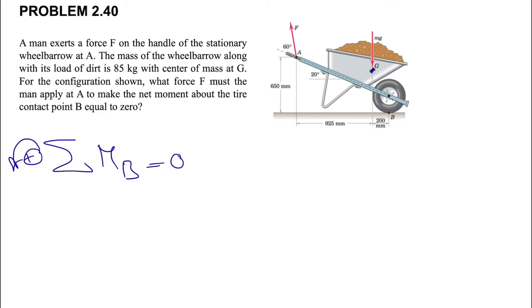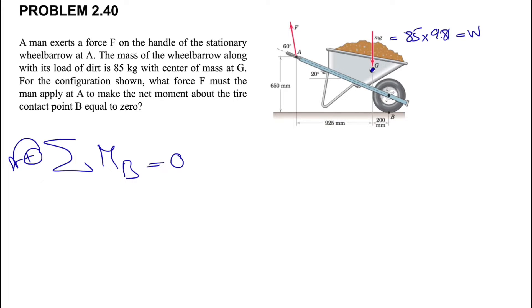We have the weight applying at point G, and we know the mass is 85 kilograms. If we multiply that by the acceleration of gravity, we can find the weight, which is m times g.